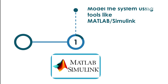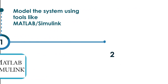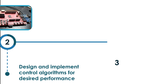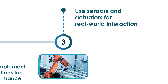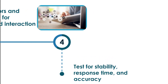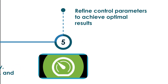Prototype Development: Model the system using tools like MATLAB or Simulink. Design and implement control algorithms for desired performance. Use sensors and actuators for real-world interaction. Test for stability, response time and accuracy. Refine control parameters to achieve optimal results.